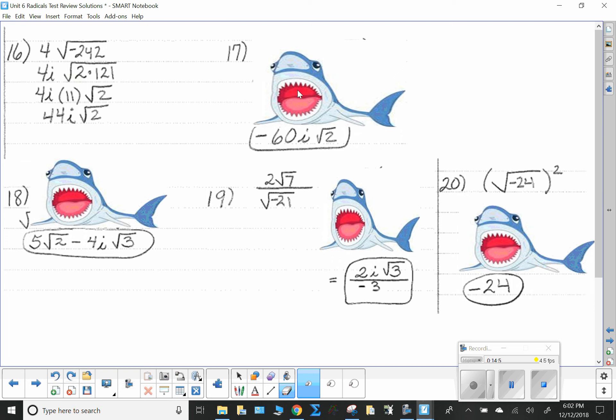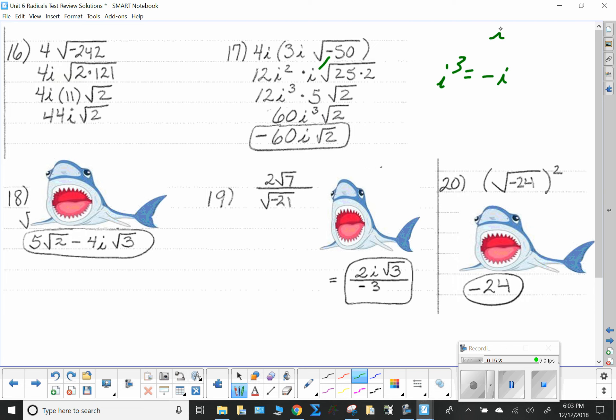Next up, number 17. Here, I'm going to take the i times the i and get i squared. The 3 times the 4 is 12. Over here, I'm going to take the i out, and then the 50 gets broken apart into 25 and 2. Now, I can take the square root of 25 is 5. I also look at i squared and i is i cubed. 12 times the 5 is the 60. Remember, i cubed is equal to negative i. We call this i1, i1, and negatives in the middle. This is i, i squared, i cubed, i to the 4th. So, i cubed becomes negative 1.